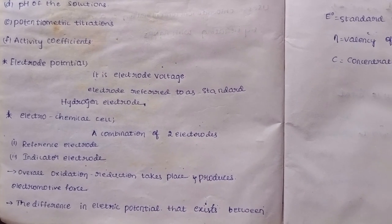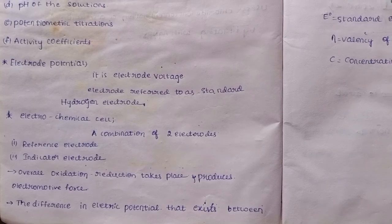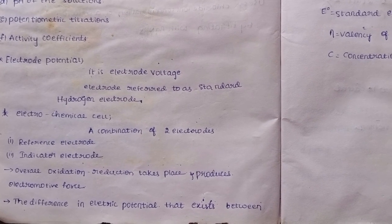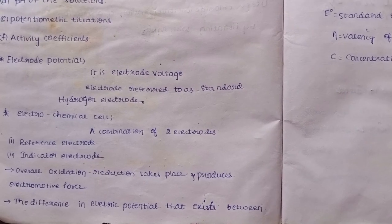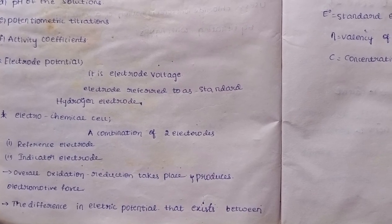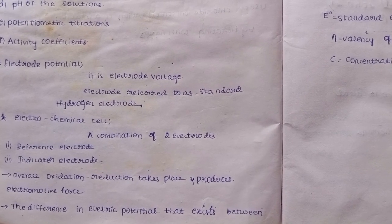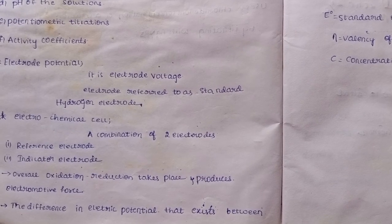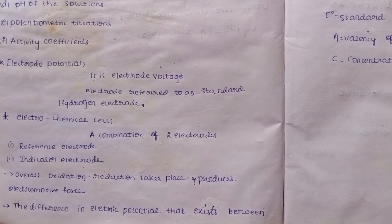Electrode potential. First, what is the electrode voltage? It is an electrode voltage. Voltage is energy. What is the electrode potential? Electrode refers to a standard hydrogen electrode. An electrochemical cell.